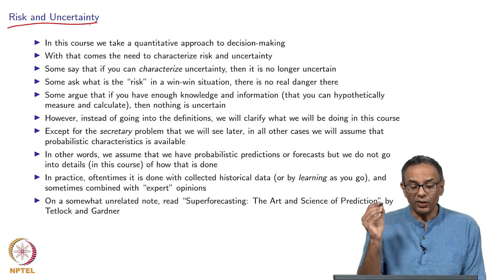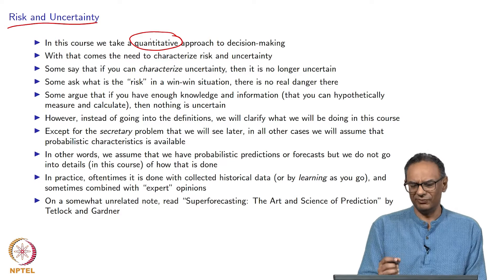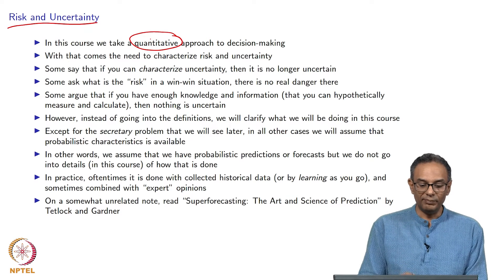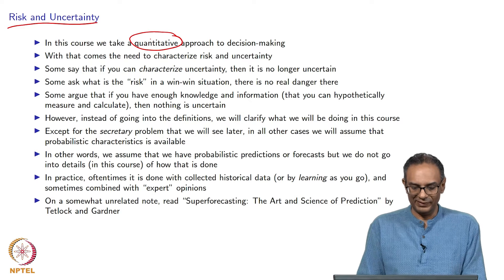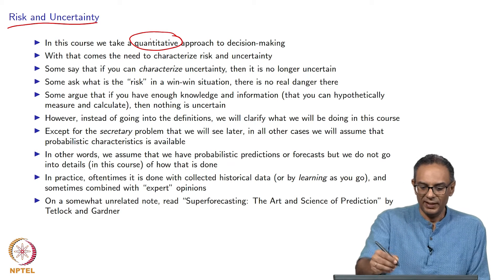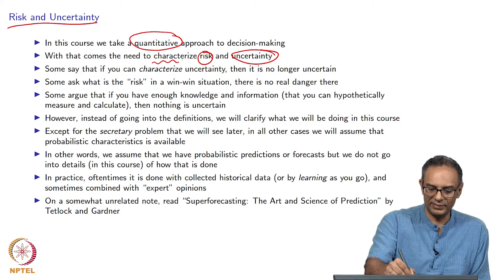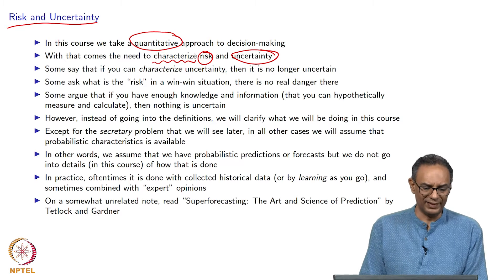We are going to take a quantitative approach. For the most part, there is very little qualitative decision making that we are going to talk about in this course. When we look at a quantitative approach, we are talking about somehow quantifying various things. The uncertain things, the risk and so on, need to be quantified or characterized. These two things are important. So the question is how do we go about characterizing this thing called risk and this thing called uncertainty?